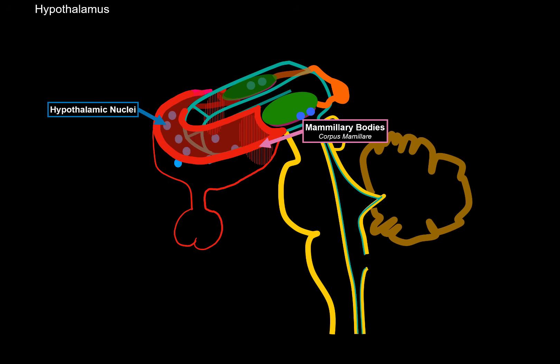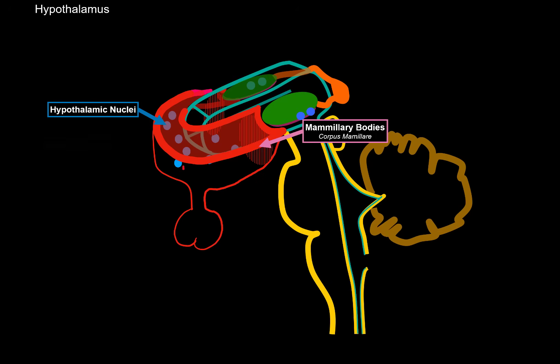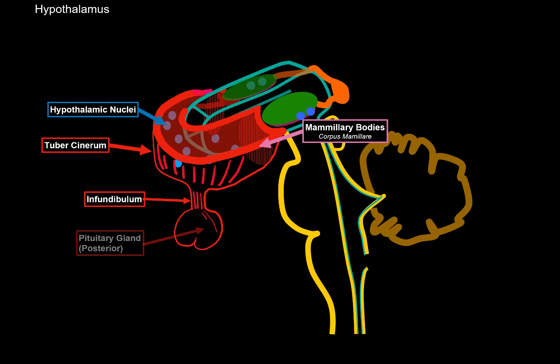Other structures in the hypothalamus include numerous hypothalamic nuclei. Some send axons through the tuber cinereum, which forms a stalk called the infundibulum that synapses with nuclei in the posterior pituitary gland. Hormones released from the posterior pituitary, like vasopressin or oxytocin, get their trigger stimulus from the hypothalamus through these fibers.